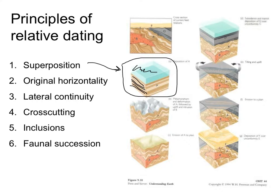Original horizontality and lateral continuity also relate to these layers. We assume that under most normal conditions, layers are laid down fairly horizontally. Those horizontal layers may later be tilted up, but initially we expect them to be mostly horizontal — maybe at a slight angle if a river is depositing sediments at its mouth — but generally we don't build new rock layers vertically.